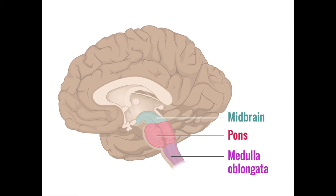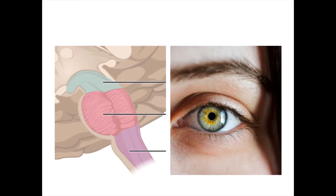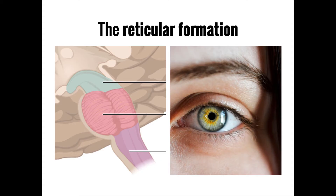Each part of the brainstem contains unique nuclei that carry out specific functions. The three parts can also work together to perform several larger functions. In particular, all three parts help to maintain consciousness and awareness through a shared group of interconnected nuclei known as the reticular formation.